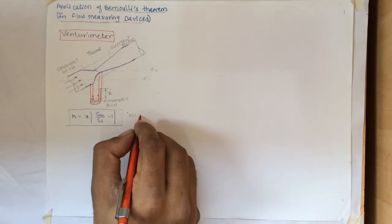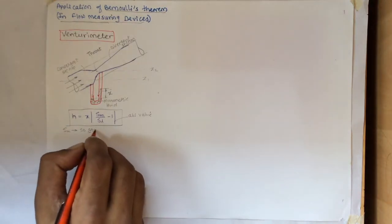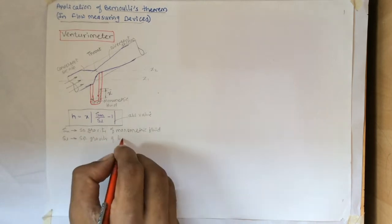Try to make this in absolute value. Otherwise you have to remember two different formulas. One will be Sm by Sl minus 1, or in other we will use 1 minus Sm by Sl. Where Sm is specific gravity of manometric fluid, Sl is specific gravity of liquid flowing in pipe.